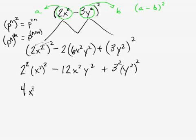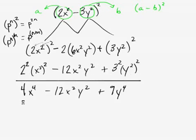2² is 4. (x²)² is x^4 minus 12x²y² plus 3² is 9. (y²)² is y^4. And this would be a final answer.